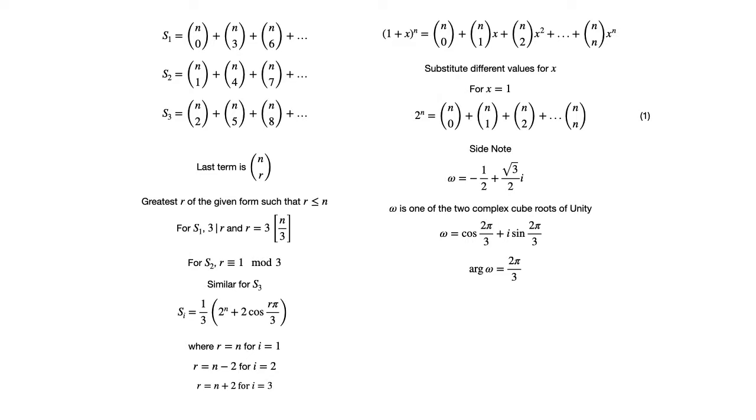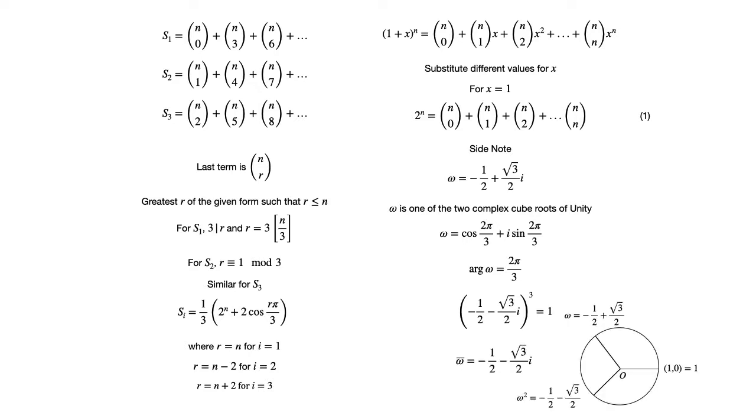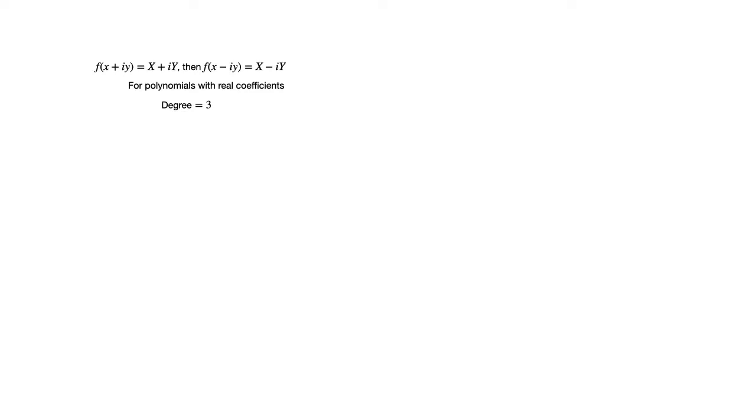The second complex cube root of unity is −1/2 − (√3/2)i, which is the complex conjugate of omega, as can be seen from the diagram of the 3 cube roots of 1. Complex roots to polynomials with real coefficients are found in pairs, both having identical real components and imaginary components with opposite signs. The 3 cube roots of unity are solutions to the polynomial x³ − 1 = 0. This equation has degree 3 and the fundamental theorem of algebra states that it should have at most 3 distinct roots.